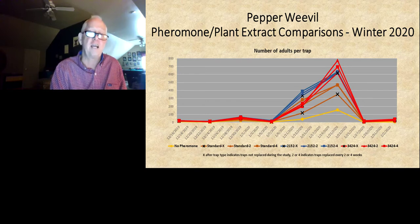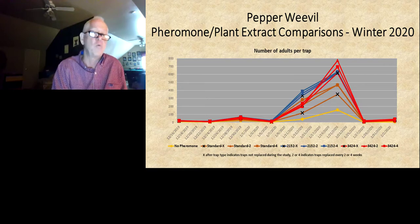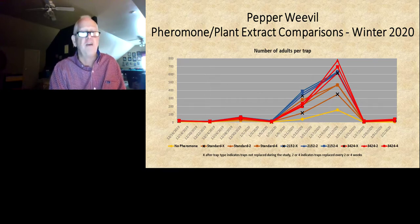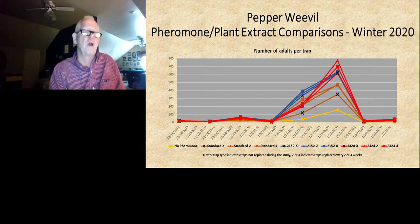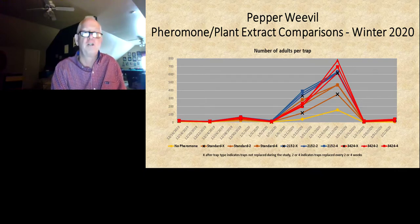Looking at different plant extracts last year, we looked at a couple of different ones in different combinations and strengths — replacing them not at all, every two weeks, and every four weeks. Looking at peaks five and six weeks after placement, there's not a lot of difference. The pheromones we were testing worked a little better than the standard pheromone, but not dramatically better. Those pheromones are also lasting probably at least a month, so where they recommend using them up to a month, I think that's accurate. In our research, we change them every two weeks to keep fresh materials out there.